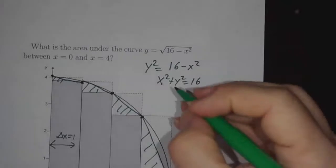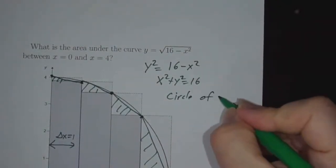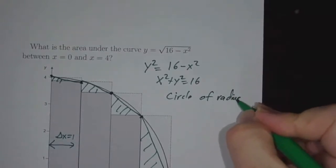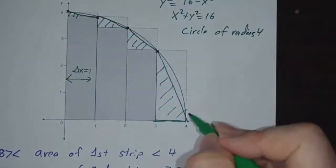It happens to be a circle of radius 4. Now, it's not the entire circle, it's just a quarter circle. It's a part of the circle in the first quadrant.